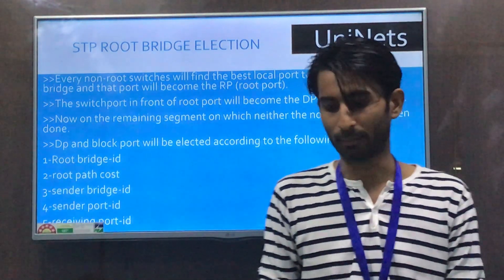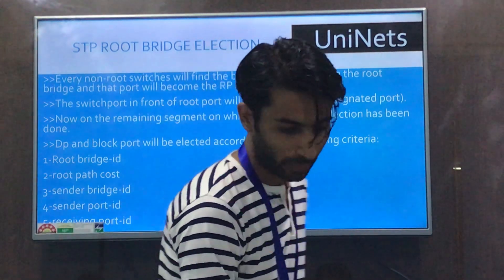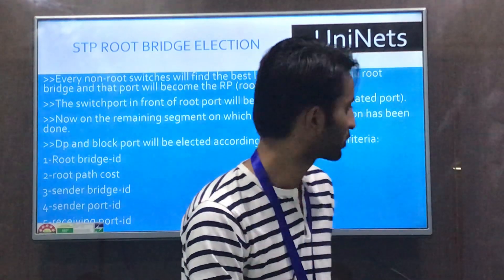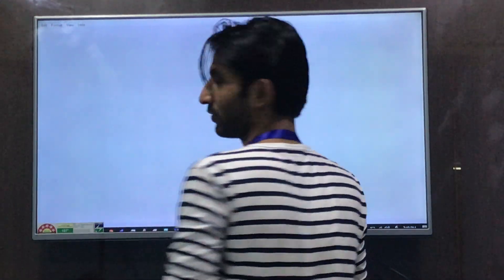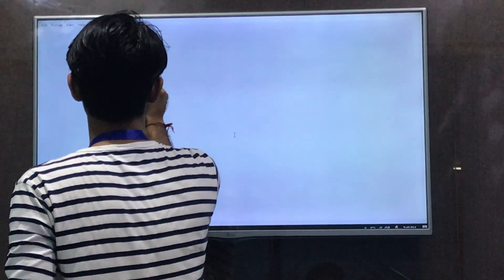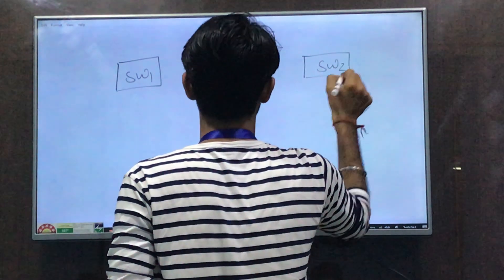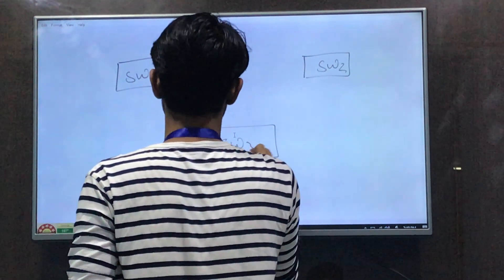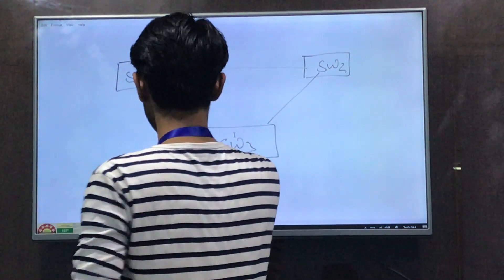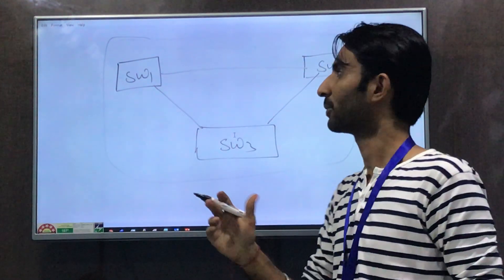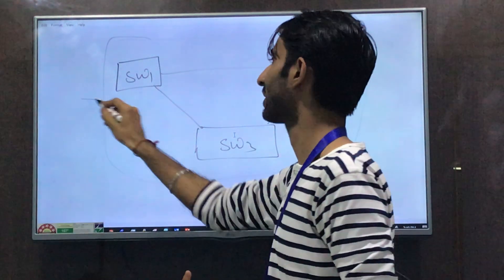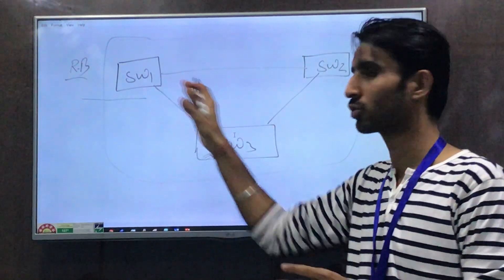Let's go to the practical lab. We will also discuss the logical topology we are going to work on. The topology will have Switch 1, Switch 2, and Switch 3 connected together. By default, we will see which of these three switches has the lowest bridge ID, and that switch will be automatically elected as the root bridge.